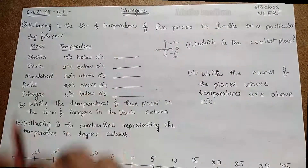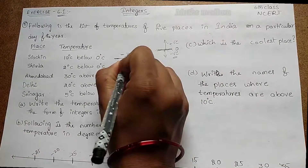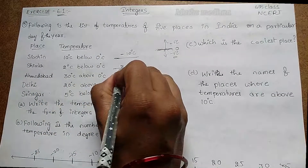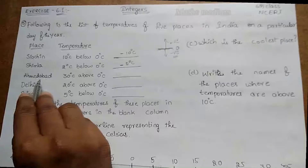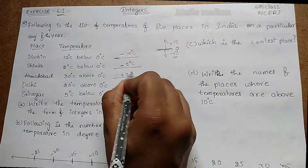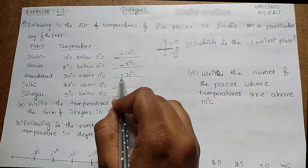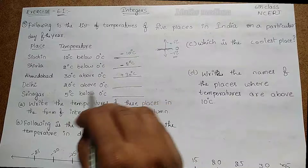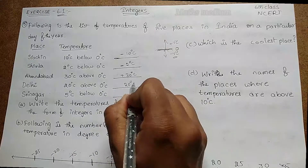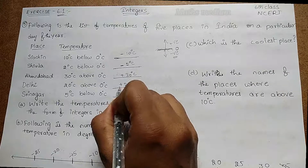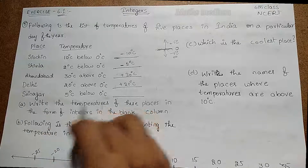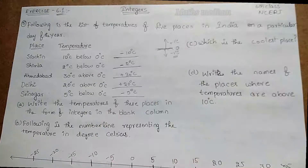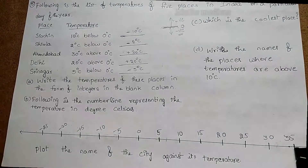So we get our answers: Siachen is 10°C below 0, so it is −10°C. Simla is 2°C below, so it is −2°C. Ahmedabad is 30°C above, so it is +30°C — I'm writing the positive symbol here for understanding purposes. Delhi is 20°C above, so it is +20°C. Srinagar is 5°C below 0°C, so it is −5°C. This is the answer to the first question.